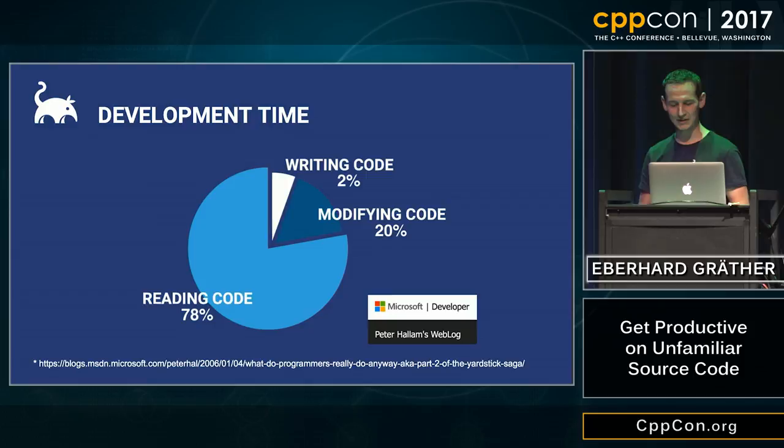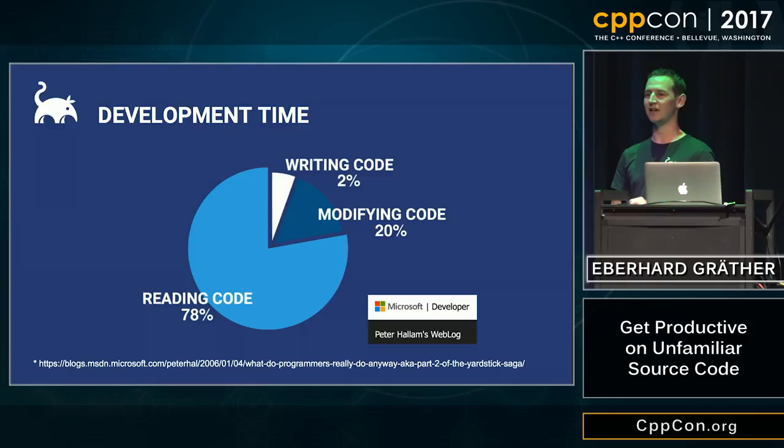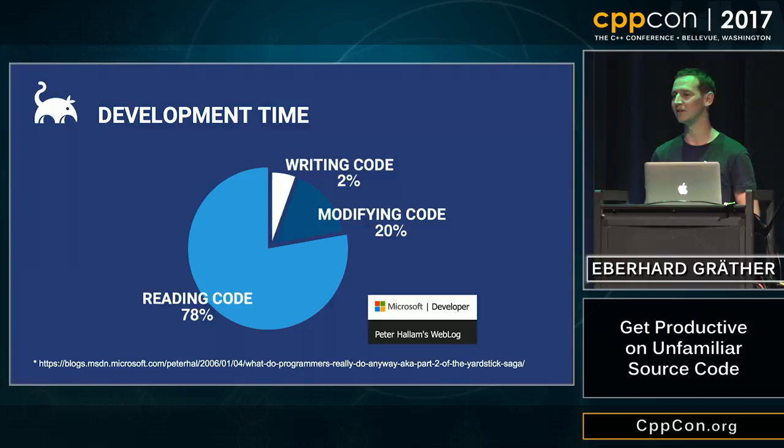I learned a big lesson: software developers really spend a lot of time on reading and understanding source code. We can argue about the numbers, but most developers I talk to agree that it's somewhere between 50 to 98%.